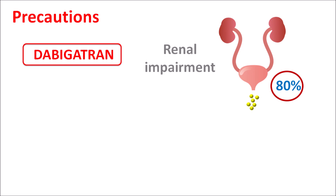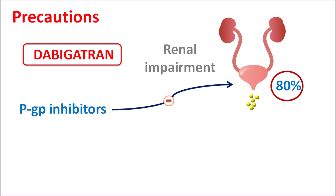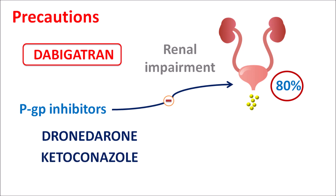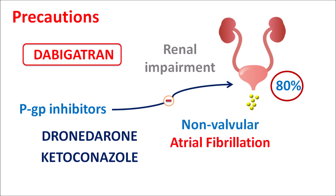In patients with renal impairment, dabigatran should be used carefully. When combined with P-glycoprotein inhibitors, renal excretion is further decreased, resulting in increased toxic effects. Drugs like dronedarone and ketoconazole, when combined with dabigatran in patients with renal impairment, require close monitoring of creatinine clearance. For non-valvular atrial fibrillation, this drug should be avoided in patients with creatinine clearance less than 30 mL/min when combined with P-glycoprotein inhibitors.